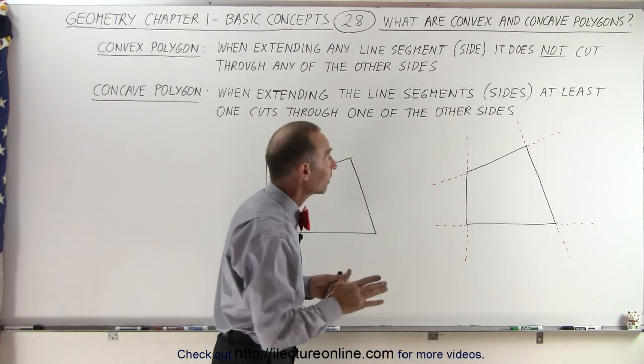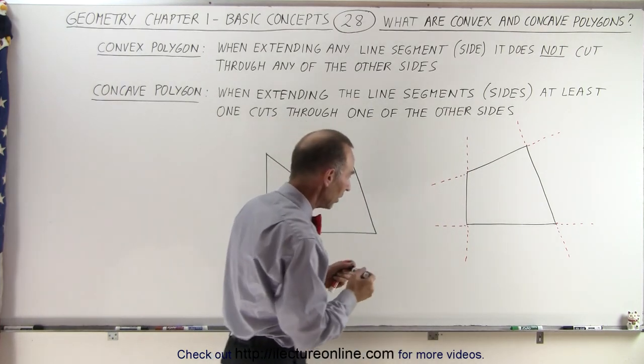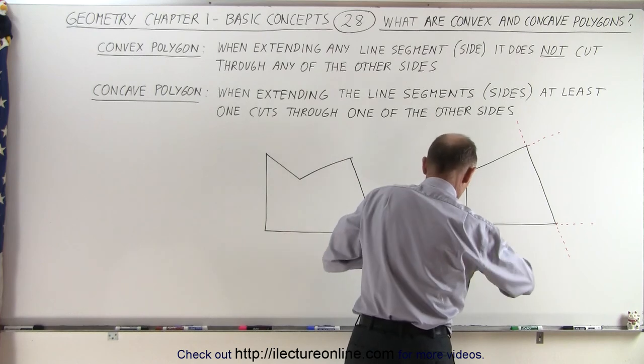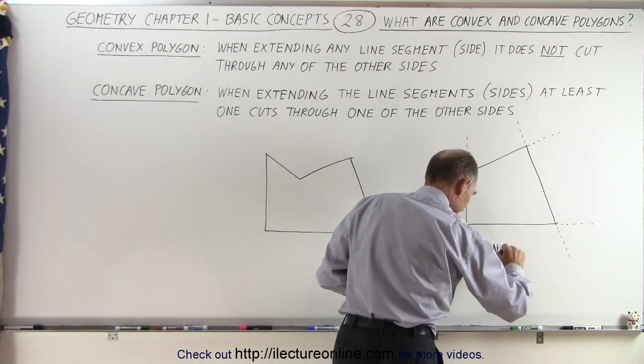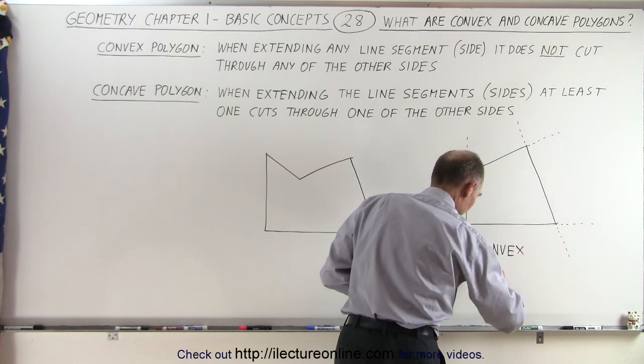So therefore, this is considered a convex polygon. And if I can get the cap off my black pen, I can write that down, convex polygon.